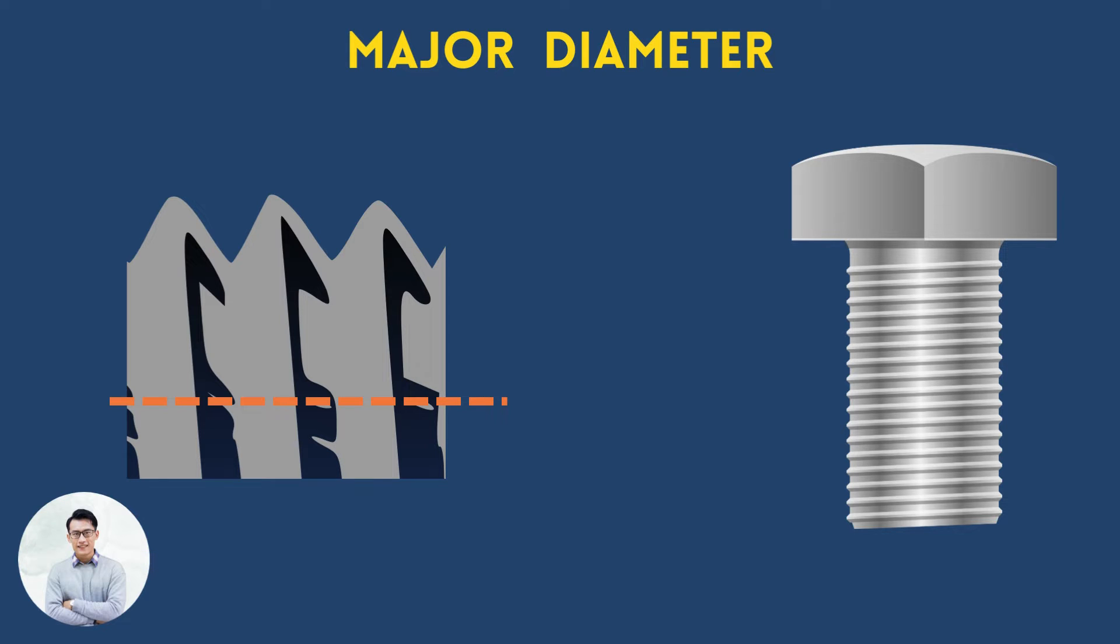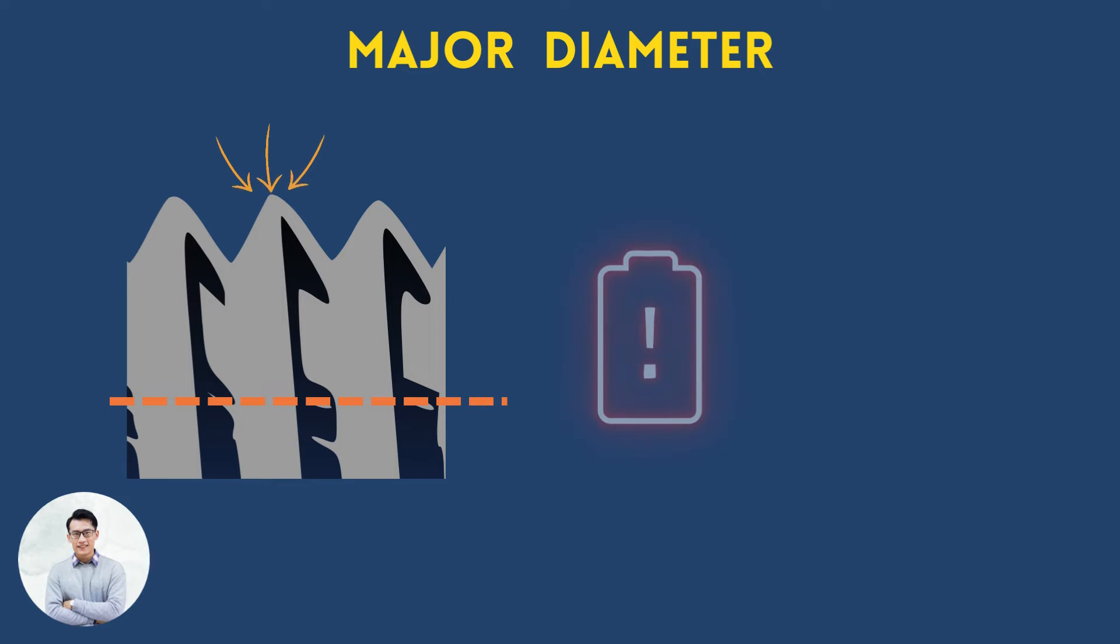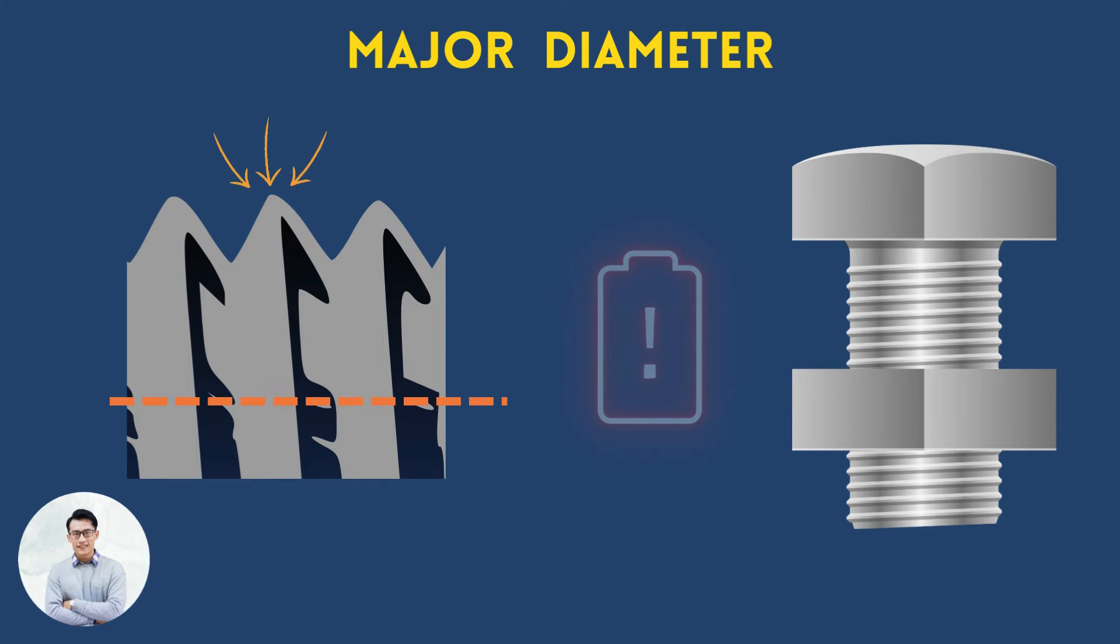In external threads, the major diameter is measured on the crest, and it is a critical dimension to control since it influences whether the screw would fit on a bolt.